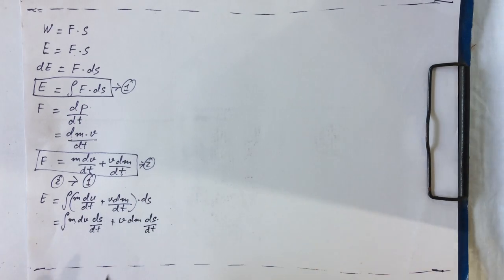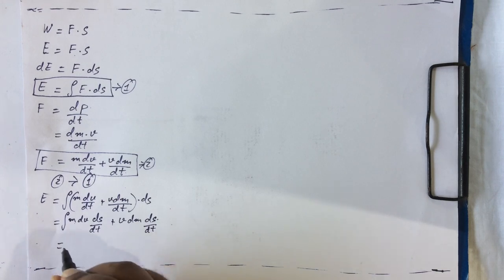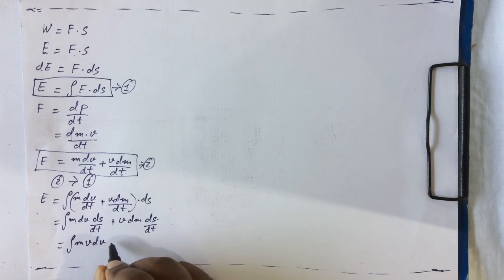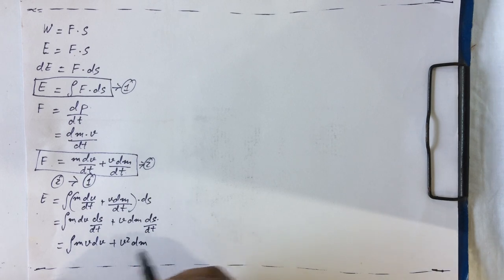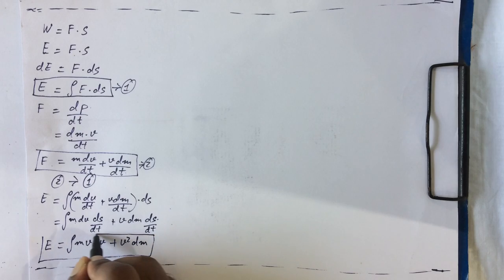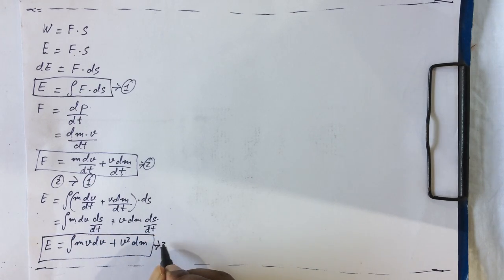Now we know that ds/dt is nothing but velocity. So we can write it as the integral of mvdv plus v² dm, because ds/dt is velocity. Let us consider this as Equation 3.